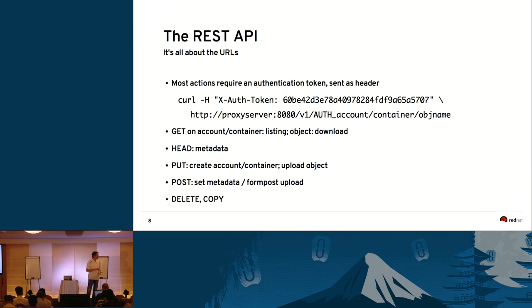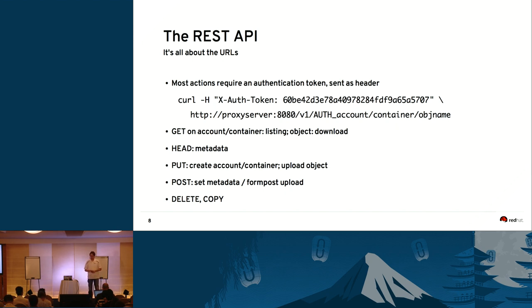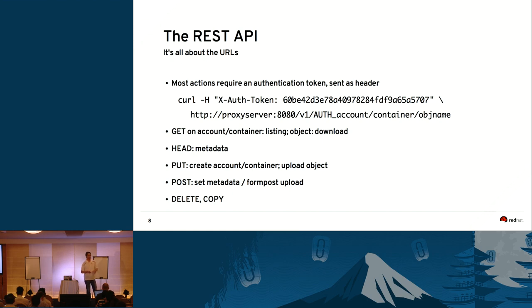To talk to Swift you use the REST API, which normally requires an authentication token sent as an HTTP header. The token comes from your authentication system, for example Keystone if you use the one shipped with OpenStack. There are only a few basic operations needed: GET to list or retrieve objects, HEAD to read metadata, POST to store new metadata, PUT to upload a new object, DELETE to remove objects, and COPY to copy existing objects to a new name.